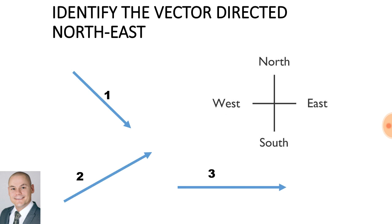Identify the vector directed north-east. Is it vector 1, 2, or 3? Vector 2 is pointing north-east.